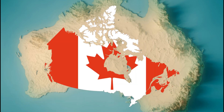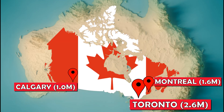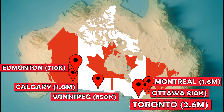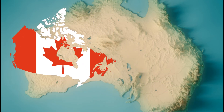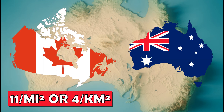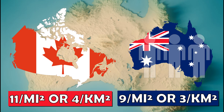Canada's biggest cities are Toronto, Montreal, Calgary, Ottawa, Edmonton, and Winnipeg. Canada has 11 people per square mile, or 4 people per square kilometer, while Australia is even more sparsely populated, having 9 people per square mile or 3 people per square kilometer.